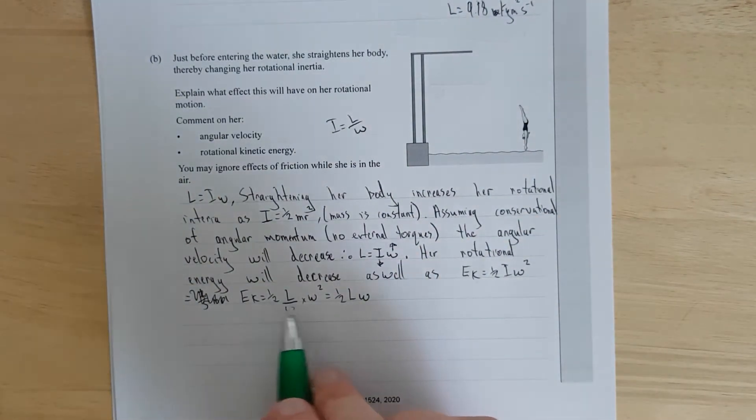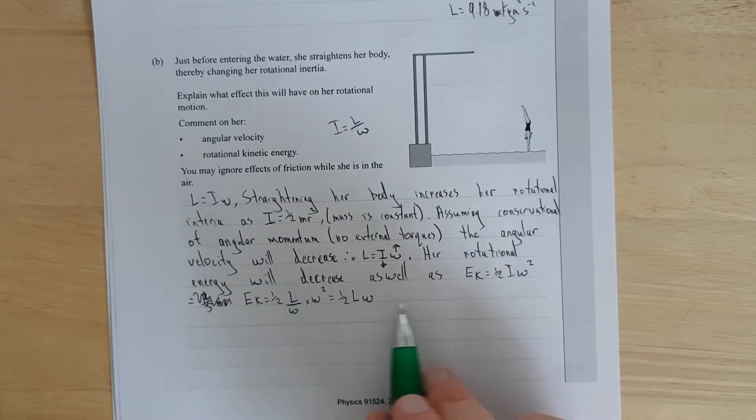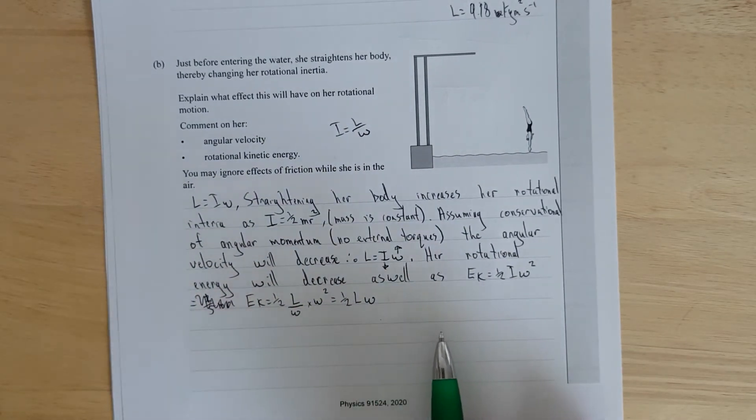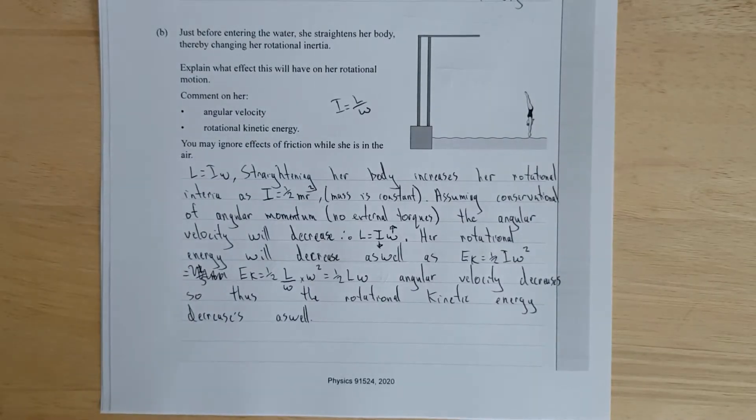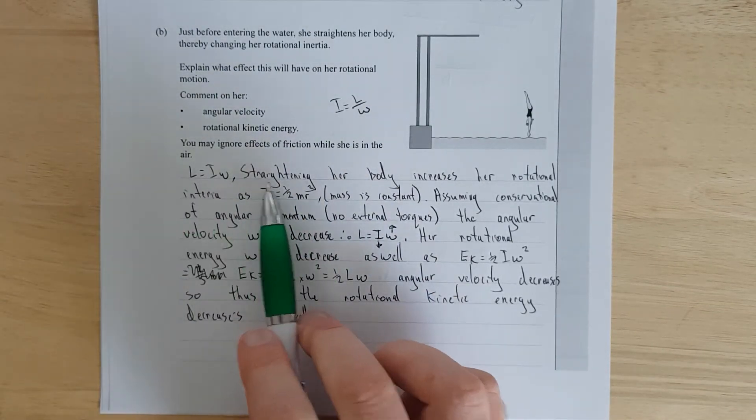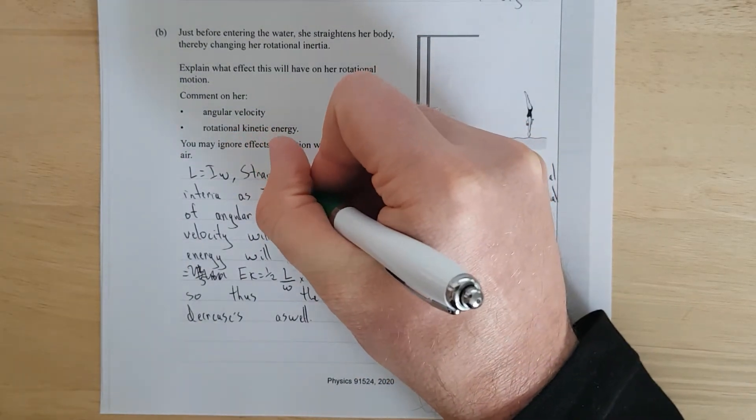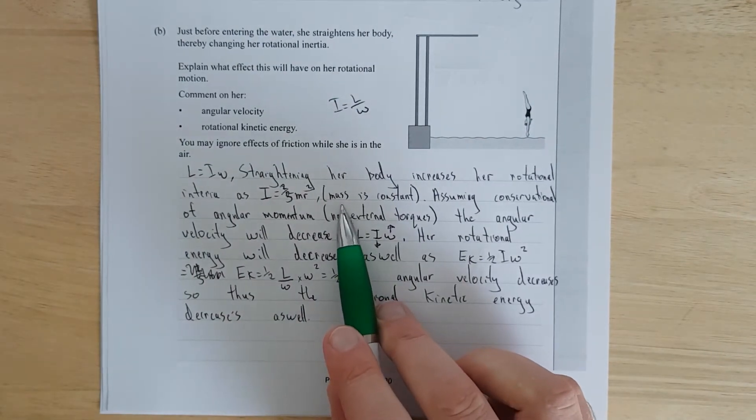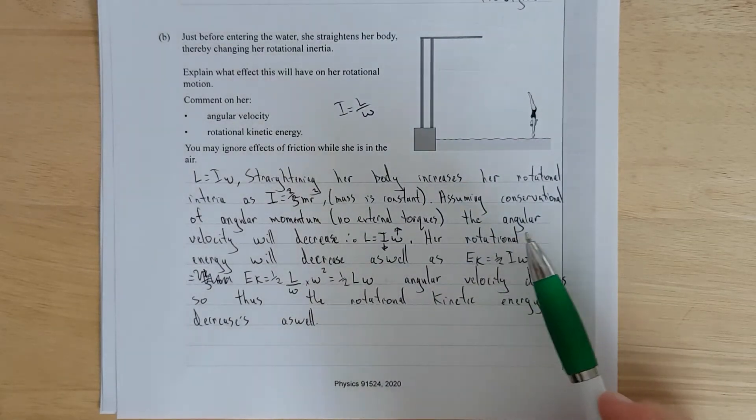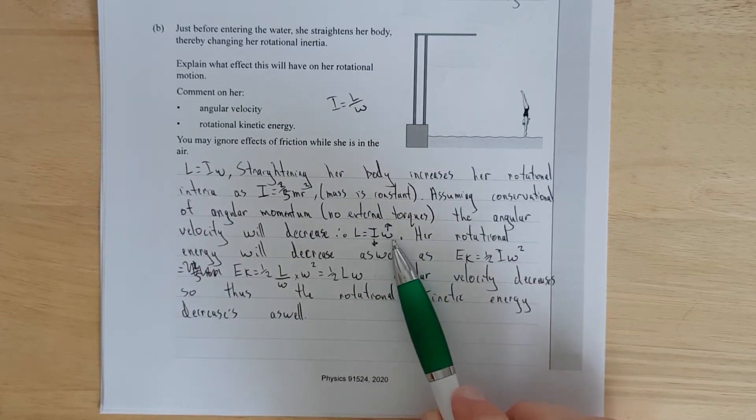As that is true, this means that angular velocity has decreased, so the energy will decrease. Right, so I'll just finish it off. I had completely blitzed out for a second. I just realized I went on a complete tangent because I'd written half of this. Right, so we'll start from the start. Straightening our body increases the rotational inertia, as the rotational inertia formula, and that should be 2/5, not half, mv squared. Mass is constant. Assuming conservation of angular momentum, brackets, no external torques, you've got to chuck that weird caveat in there. The angular velocity will decrease.